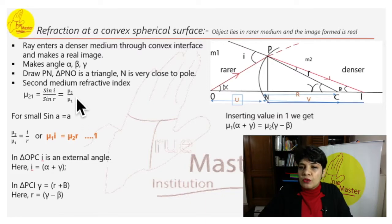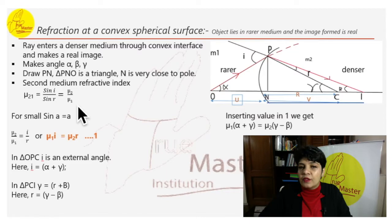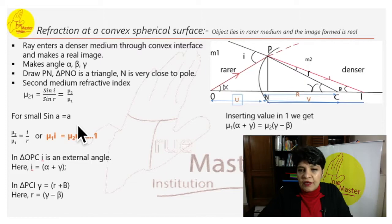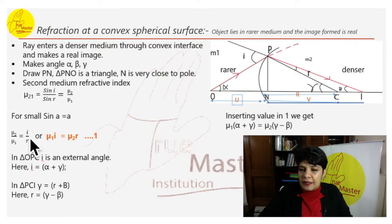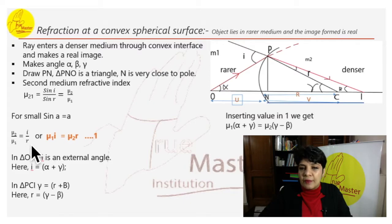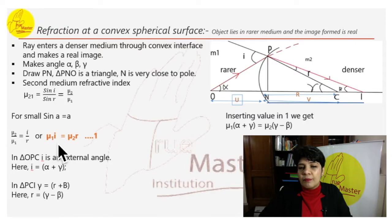mu_2 is for the denser medium and mu_1 is for the rarer medium. For small angles, sine a can be approximated as a, so we write mu_2 over mu_1 equals i over r, eliminating sine. Cross-multiplying gives us mu_1 · i equals mu_2 · r.